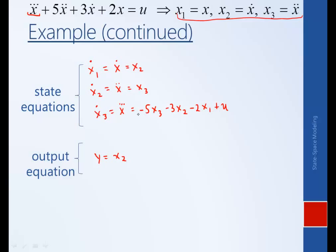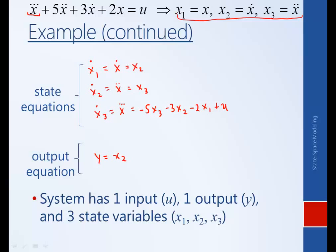Looking at this, this is a complete state-space model of the original differential equation. This particular system has one input u, it has one output y, and it has three state variables: x1, x2, and x3.